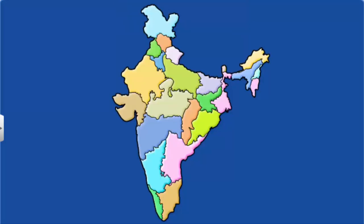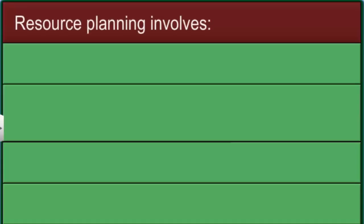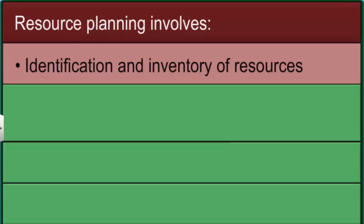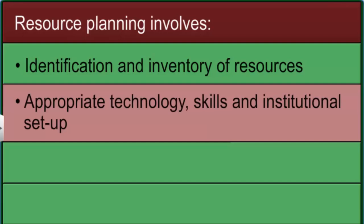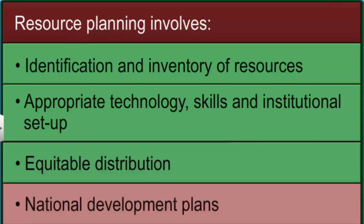The mere presence of resources is not enough for the development of a region. In India, Madhya Pradesh is rich in minerals but lacks communication and transport facilities. What else is required for economic growth besides the availability of resources? This is where resource planning comes in. It involves the identification and inventory of resources, planning with appropriate technology and skilled human resources, setting up suitable institutions for implementation of resource development plans, and equitable distribution of available resources for sustained economic development, matching these with national development plans.